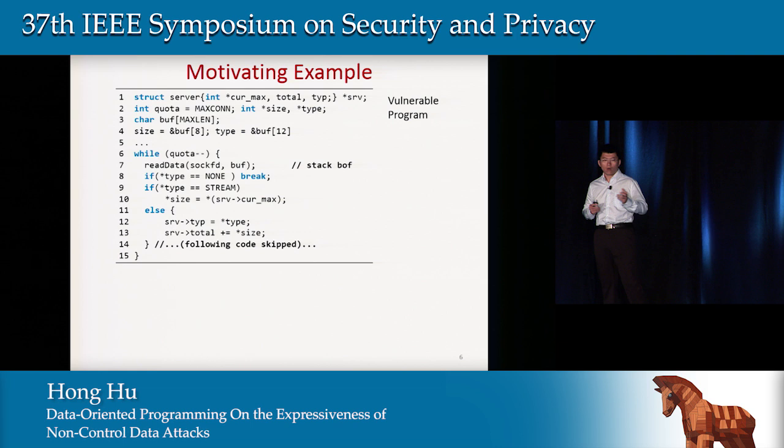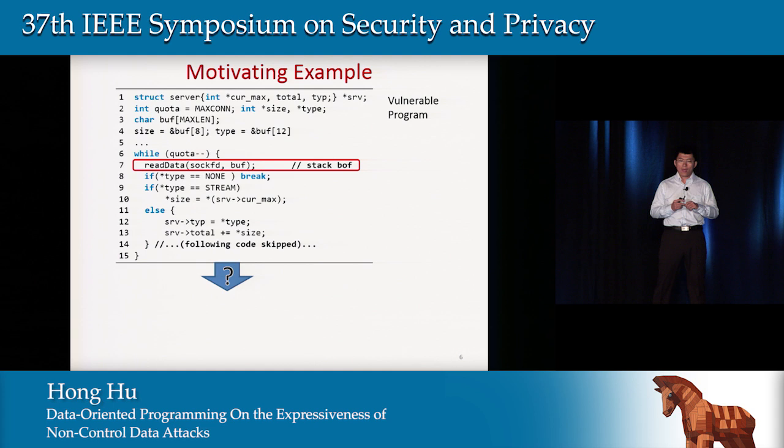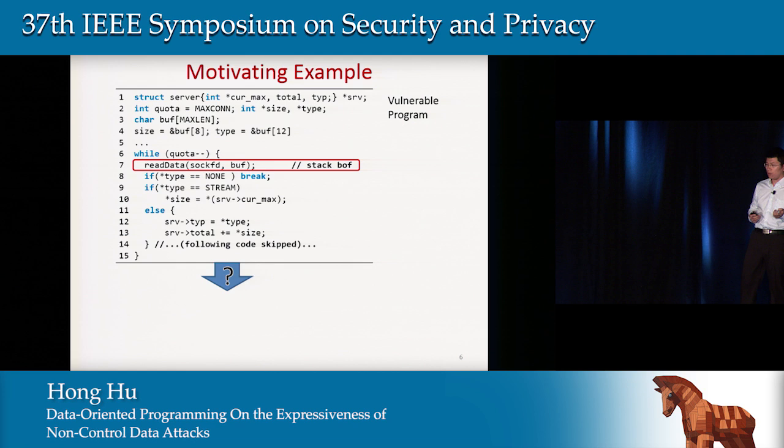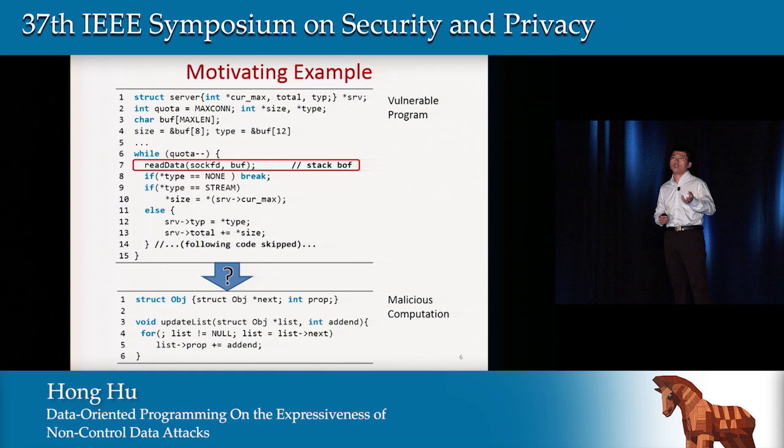Let's check this simple program. This is a server program with a stack-based buffer overflow, and it doesn't have any critical data or functions. We want to understand what attacks can do. Say an attacker wants to invoke the update_list function — can they achieve this goal while guaranteeing that execution totally conforms to the control flow graph?